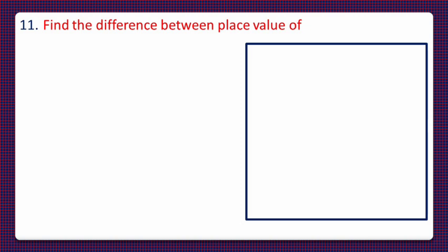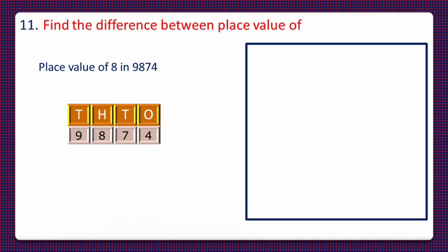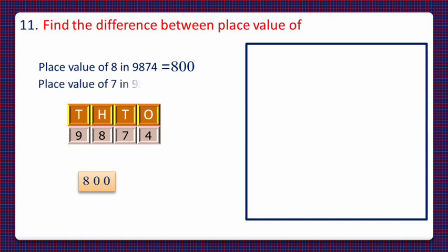Next, question number 11: find the difference between the place value of 8 and the place value of 7 in the number 9874. First we'll find the place value of 8 in 9874. We write the number in a place value chart — 8 lies at the hundreds position, so 800 is the place value of 8.